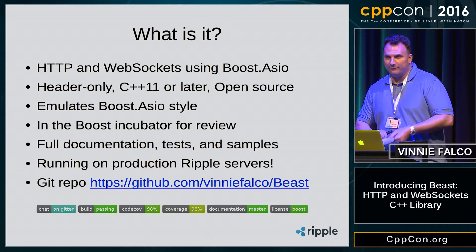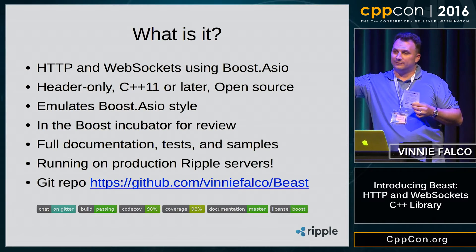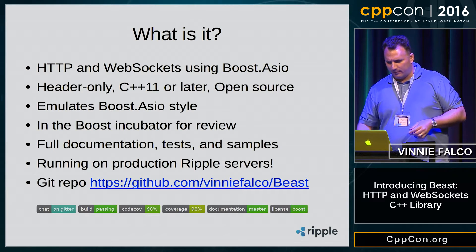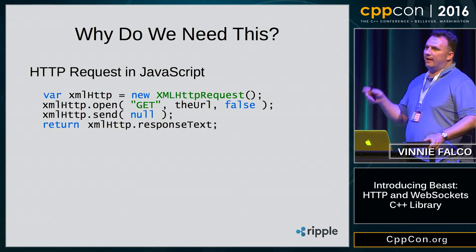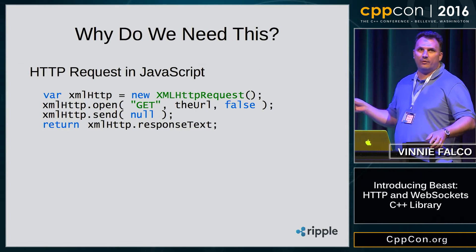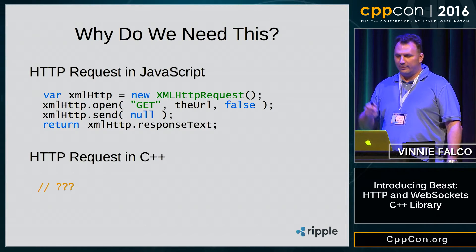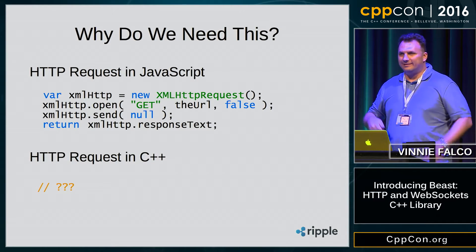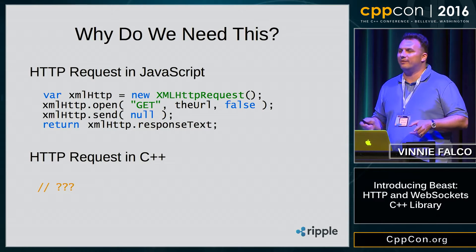You might have seen the brochure I've been handing out with information about Beast, including the link. There's a box full of brochures — feel free to grab one on your way out. So why do we need HTTP and WebSockets? Here we have an HTTP request in JavaScript, which is built into the language and looks very nice. Here's the equivalent request in C++. It's been long enough — we need this. It's a little embarrassing that we don't have it yet.